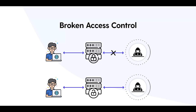This video is on broken access control. Access control focuses on authorization, which controls who and what can perform specific actions or access specific resources. Bad access control leads to unauthorized access, modification, and even destruction of resources. There are numerous access control vulnerabilities, like metadata manipulation, CORS misconfiguration, and JSON web tokens, which can all be handled by proper access controls.